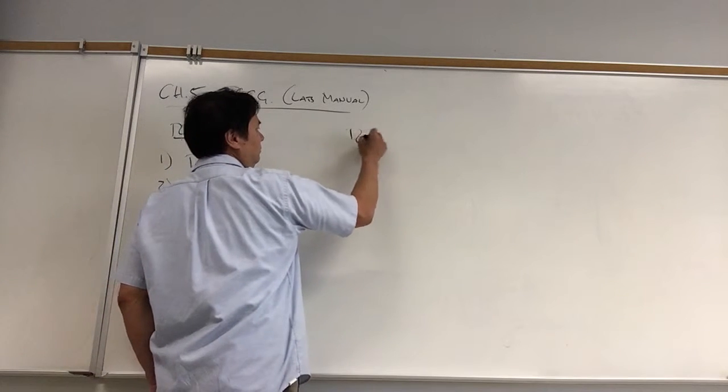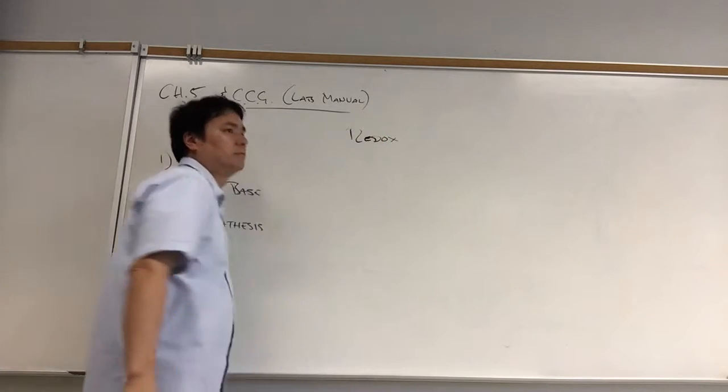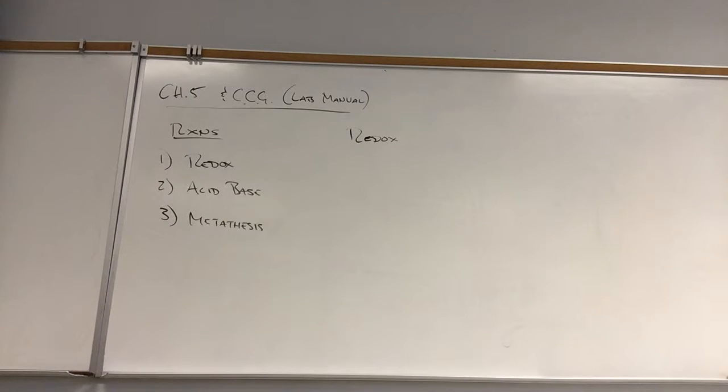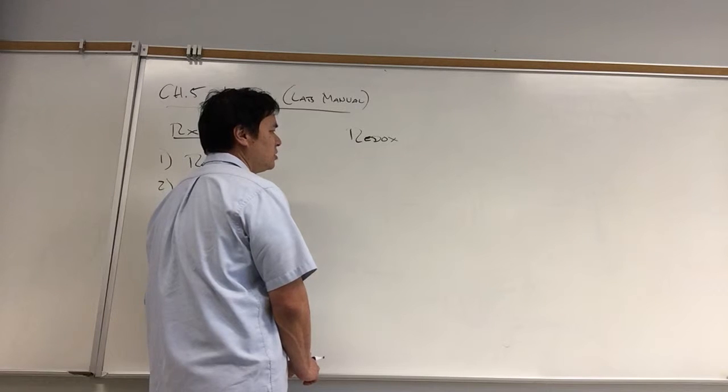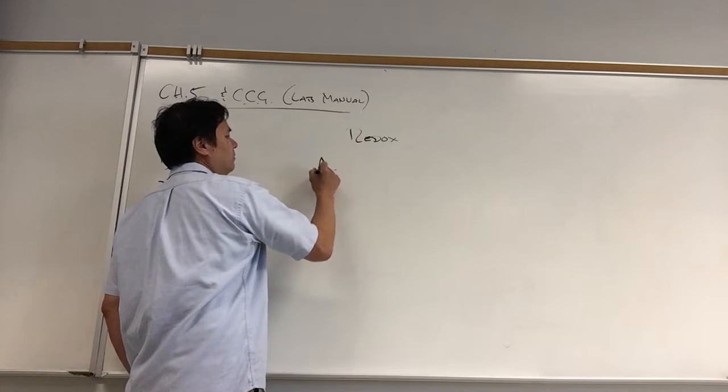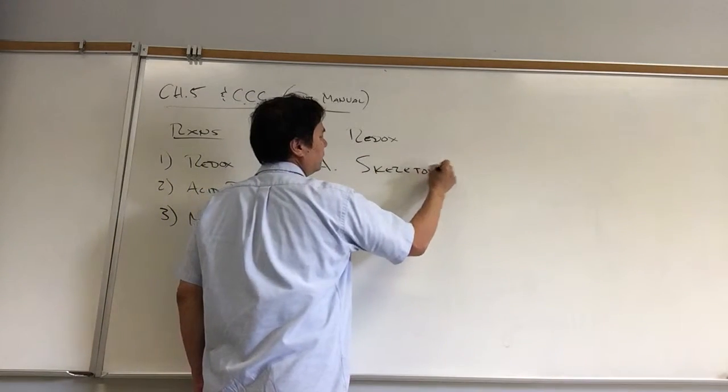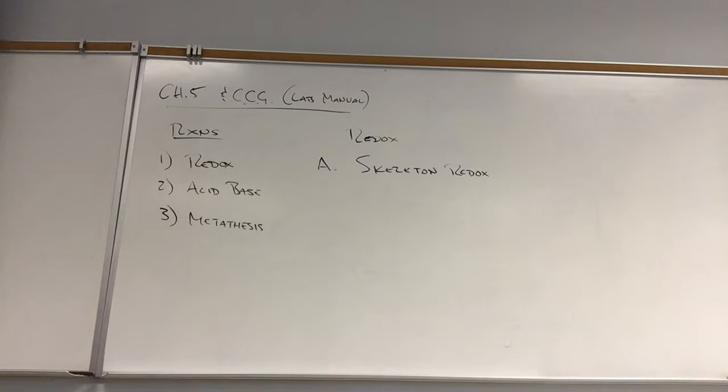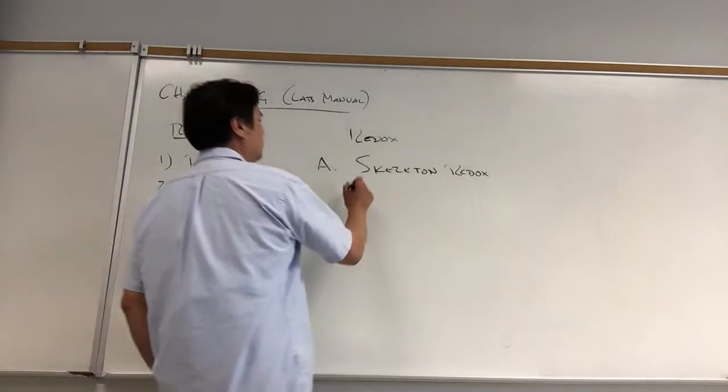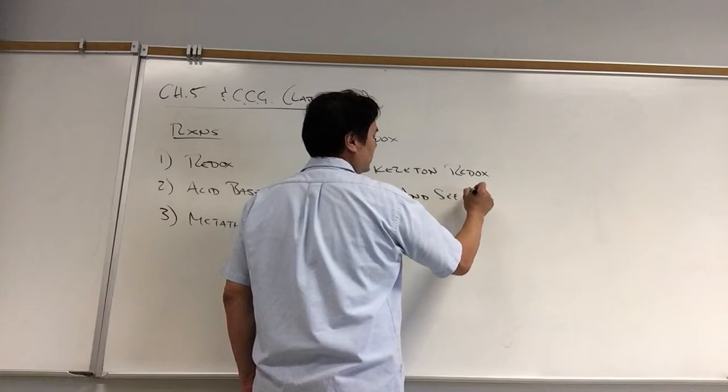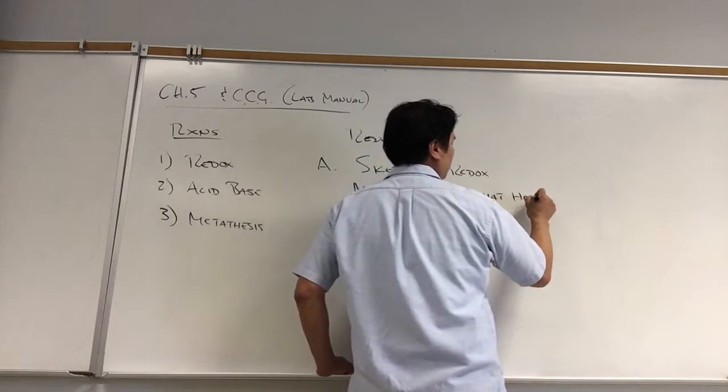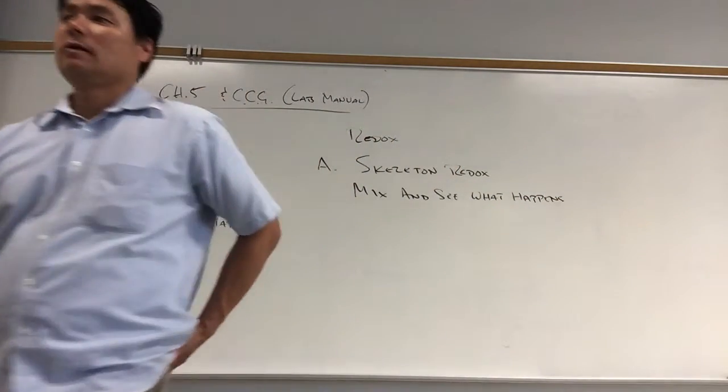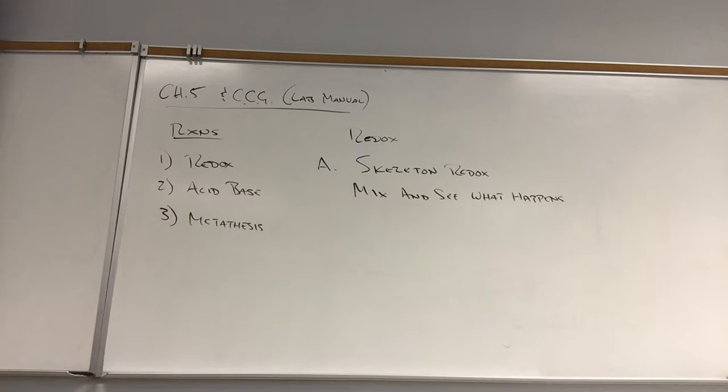The first type, the redox reaction, some of these can get quite complicated. As you saw when we're looking at balancing the chemical reactions in Chapter 4, some of those were really complicated in the sense that they formed many different products. And a lot of redox reactions depend on the conditions that they were run. And so the first type of redox that we're going to look at is called the skeleton redox. The skeleton redox you've done in Chem 4, basically what it is, is you just mix and then see what happens. You should mix carefully because redox reactions can be quite violent, depending on the way you're reacting.